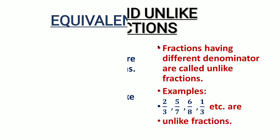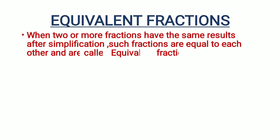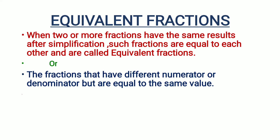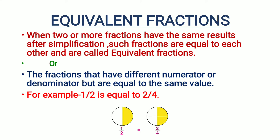Now, equivalent fractions. When two or more fractions have the same result after simplification, such fractions are equal to each other and are called equivalent fractions — or fractions that have different numerators or denominators but are equal to the same value. For example, one upon two is equal to two upon four. If we simplify two upon four, we get one upon two only.